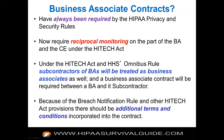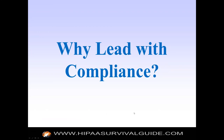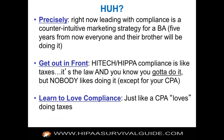Business associate contracts have always been required under both the privacy rule and the security rule — nothing new under HITECH. What's different now is the concept of reciprocal monitoring and the fact that subcontractors are treated as business associates. The concept of a business associate contract itself has been around for a long time.